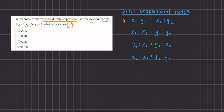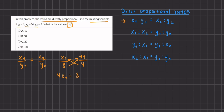Using our first formula, we have x1 divided by y1 equal to x2 divided by y2. Plugging in the values: x1 is our missing variable, y1 is 8, x2 in the numerator is 14, and y2 is 4. We can cross-multiply because we have two fractions set equal to one another, so we multiply the opposite denominator by the opposite numerator. We get 4 times x1, which is 4x1.